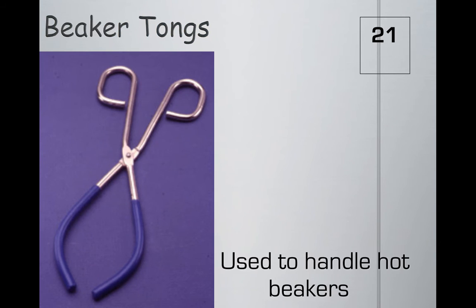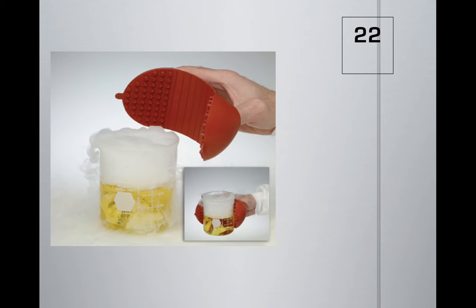These items are called beaker tongs, used to handle hot beakers. Remember the beaker was that glass-looking cup - if it were hot you would use this to pick it up and transfer it. Another object made of rubber are called hot hands. You would use them like an oven mitt that you would see in your parents' kitchen. You would pick up the beaker and it would not harm your hands because it's insulating. So it's another way to transfer or touch hot beakers or glassware.